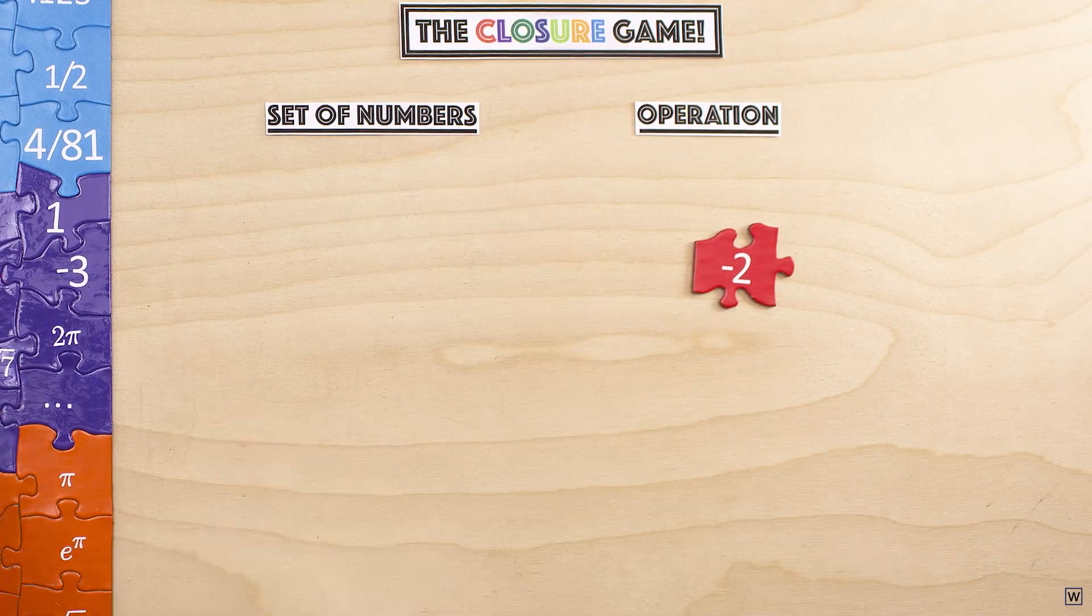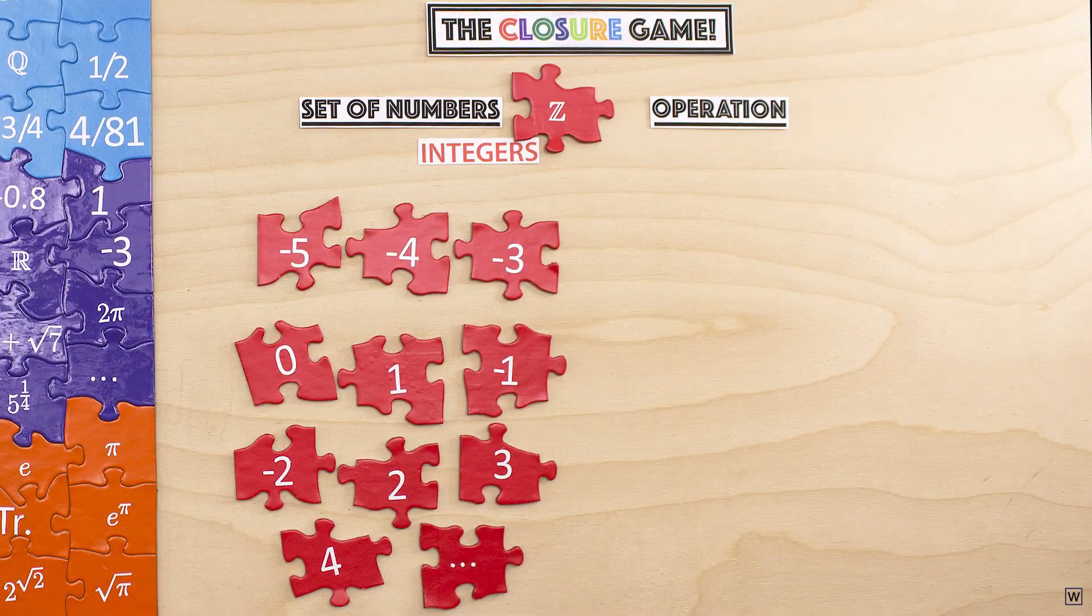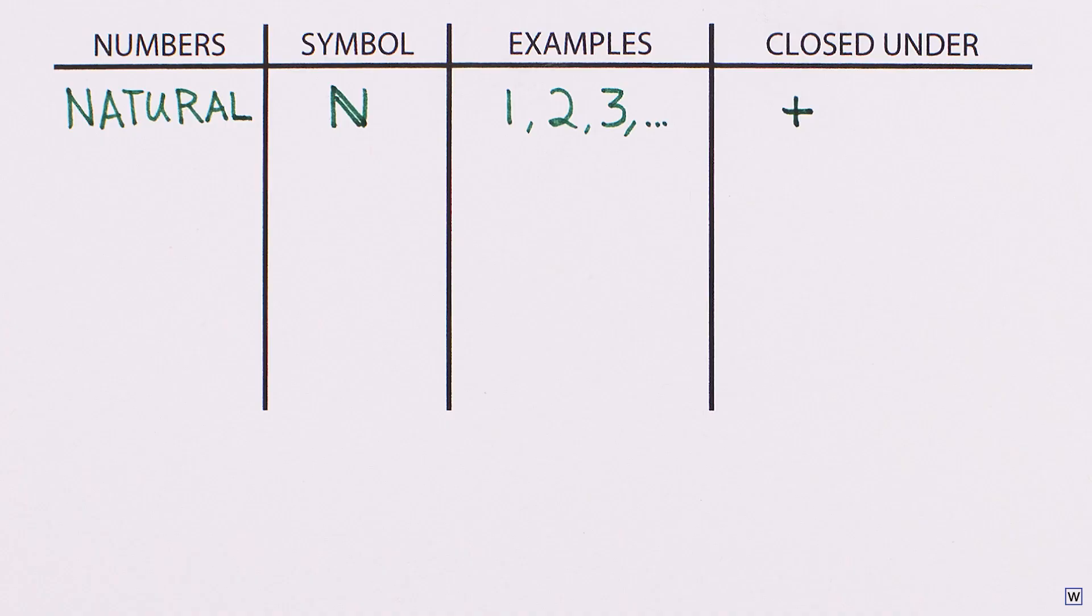We need to expand our set to include zero and negative numbers for this to be the case. So the set of natural numbers is not closed under subtraction, but the set of integers is. By expanding our number system, we can guarantee that any subtraction question we can ask will have an answer.